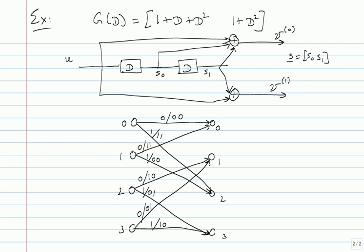One can define the next state and previous state from the trellis. For instance, from state 0 the two possible next states are 0 and 2, and the two possible previous states for state 0 are 0 and 1. What is very nice about the trellis is it is very easy to visualize decoding happening on it. The trellis is used for maximum likelihood decoding for convolutional codes.